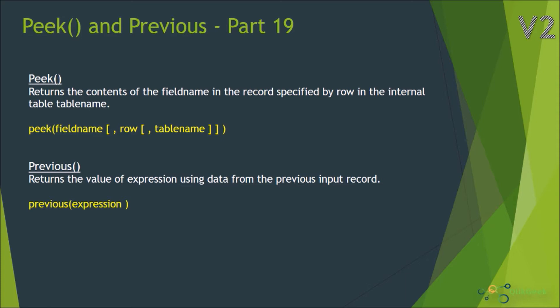The table name — the third parameter — indicates where your field belongs. The row and table name parameters are optional; only field name is compulsory. For Previous, only one parameter is accepted. Previous simply looks at the previous record, so it won't have the flexibility of passing a row number or table name. Previous depends on the input value, while Peek can look at a particular row number of a particular table, so Peek depends on output values.